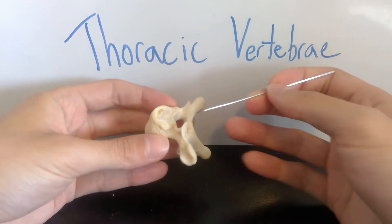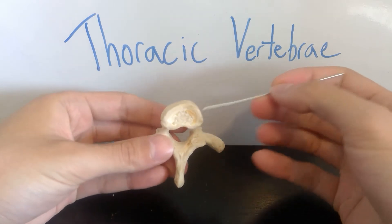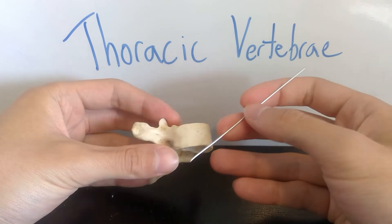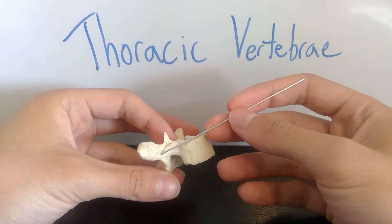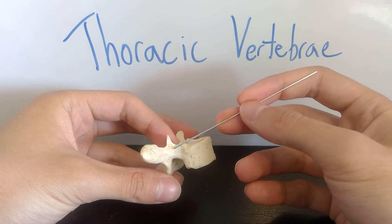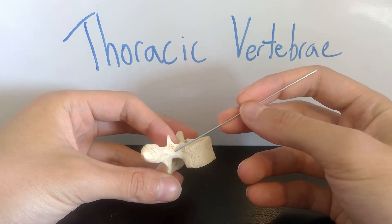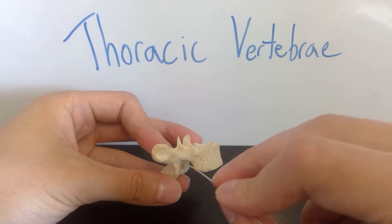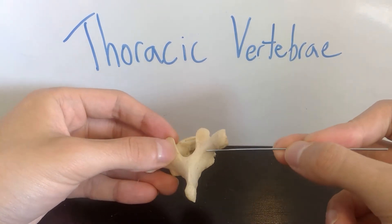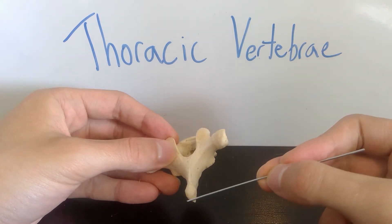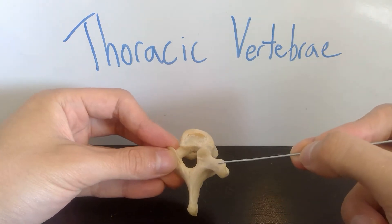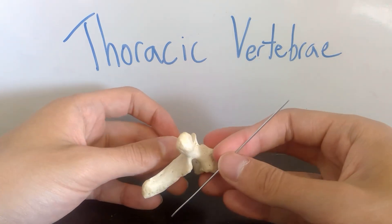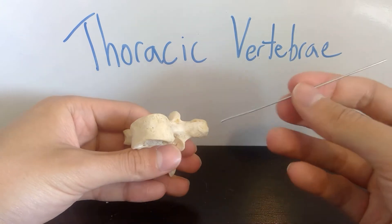First on our list, I want to start with the body, which just like the other vertebrae is this larger weight-bearing portion of the bone. The pedicle is still a connection between the processes and the body, so it's this section here. The superior vertebral notch, inferior vertebral notch, the lamina in the back connecting the dorsal spinous process, and the transverse process.